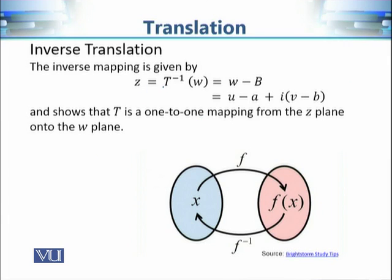In particular, if we calculate T⁻¹(w) and write w = u + iv, then the form of the inverse translation becomes (u - a) + i(v - b), where (u - a) is the real part and (v - b) is the imaginary part.